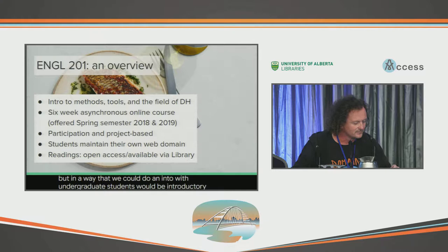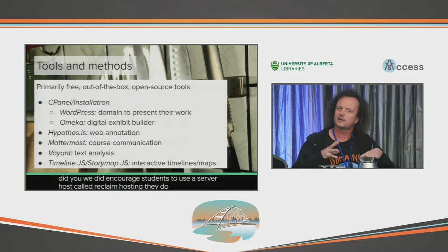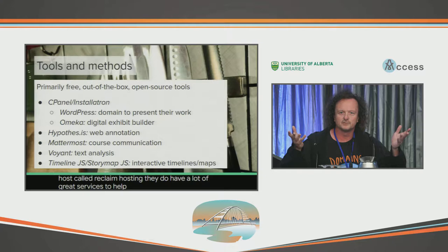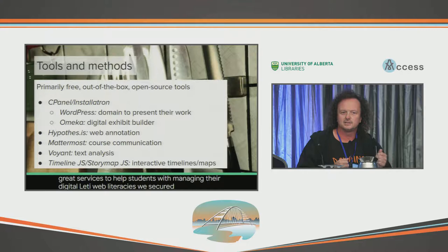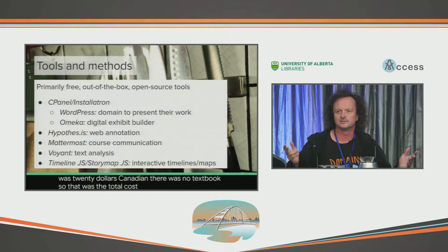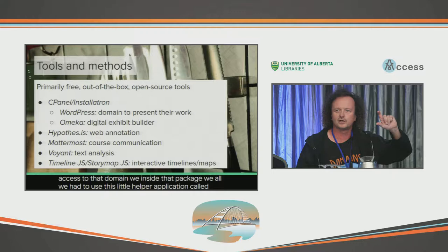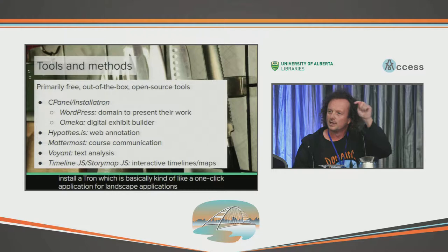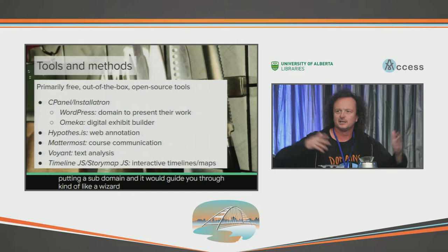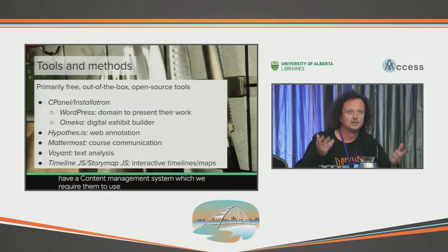We gathered a bunch of different tools together. We encouraged students to use a host called Reclaim Hosting — they have a lot of great services to help students with managing their digital identity and web literacies. We secured a discount code for students, so the cost of their own domain along with one year of hosting was $20 Canadian, and there was no textbook. Inside that package, we used a helper application called Installatron, which is basically a one-click application for LAMP applications — you put in a subdomain and a wizard guides you through setting up applications common in the digital humanities. We required students to have a content management system and required them to use WordPress, and coached them through that.